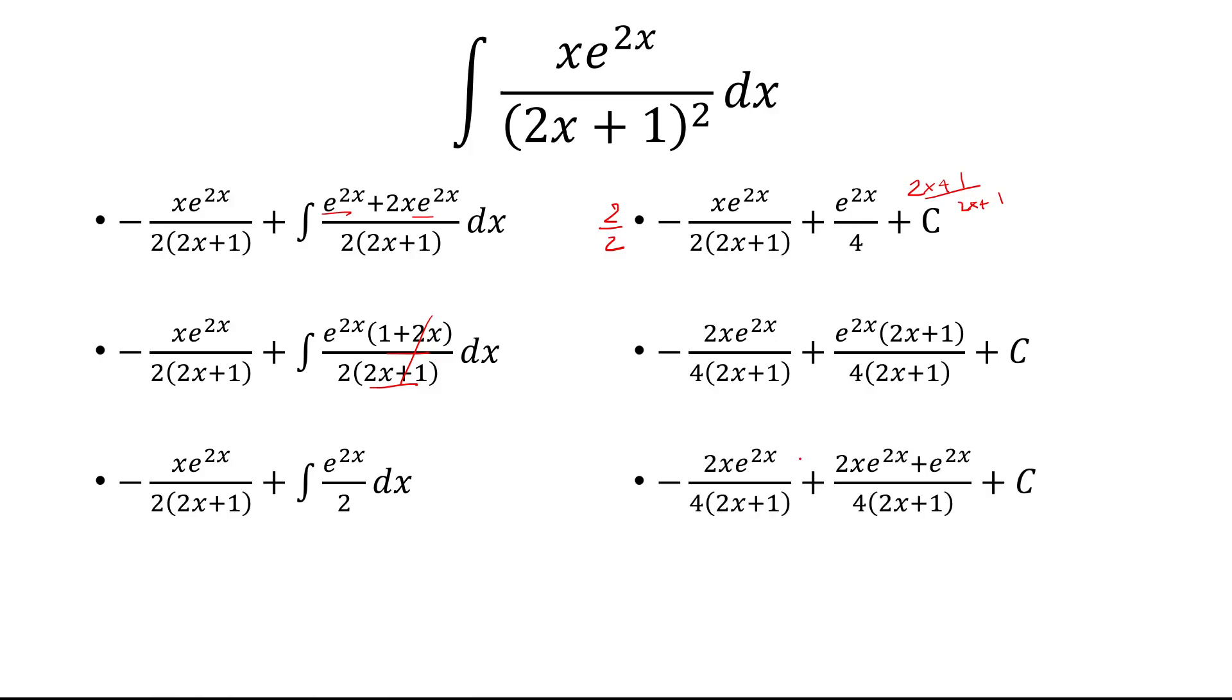Now we add these two. First we distribute the e to the 2x. And then we're going to add these two. Keep in mind, this is a negative 2x e to the 2x, and this is a positive 2x e to the 2x. So those are going to cancel.